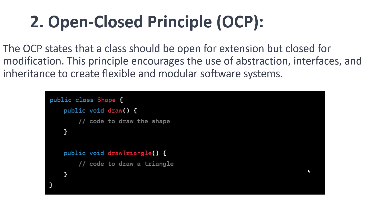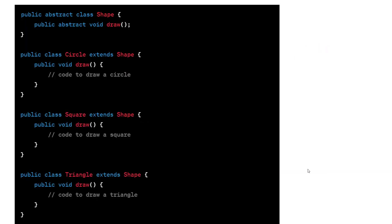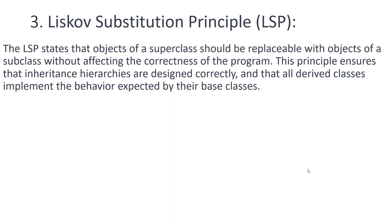Let's take an example of the Open/Closed Principle. Here we have a Shape class with a draw method. If you want to draw a triangle, you could just create a new method inside the Shape class called drawTriangle. But with lots of geometries, you'd keep adding methods one by one. Instead, using the Open/Closed Principle, you create an abstract class Shape with an abstract method draw. If you want to draw a triangle, you create a new class that inherits from Shape, and you can draw circles, triangles, and squares that way. That is the problem solved by the Open/Closed Principle.